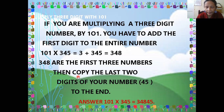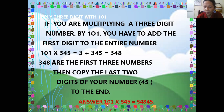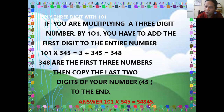Copy the last two digits of your original number to the end. So the answer when you multiply 101 by 345: first write down 348, then copy the last two digits from the original number 345, which are 45. So the answer is 34845. You can check all the work with the help of a calculator.